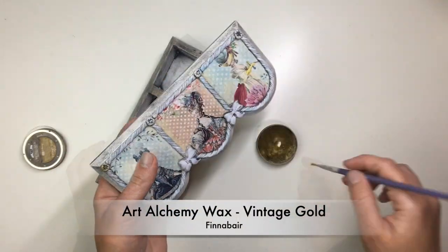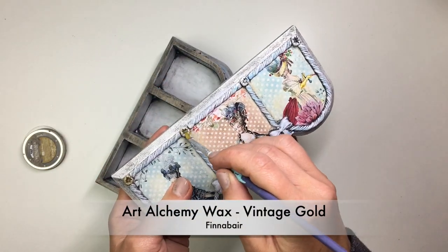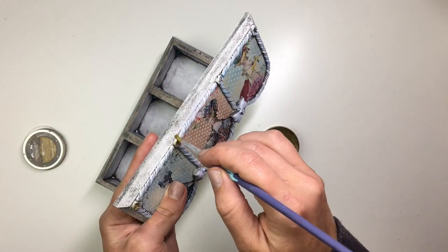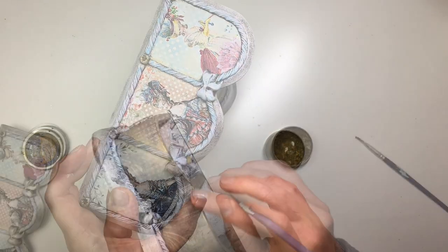And right at the very end, of course, I used a little bit of vintage gold wax by Finneba to go around the edge of the body of the jewelry box and some of the molds.